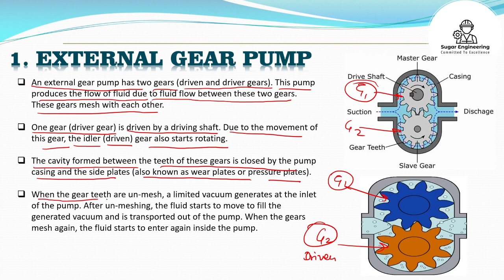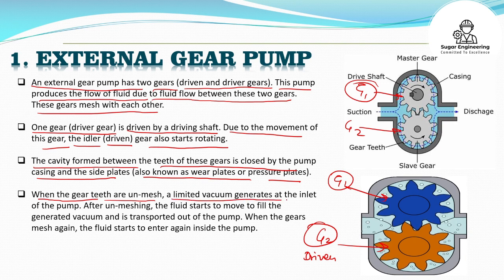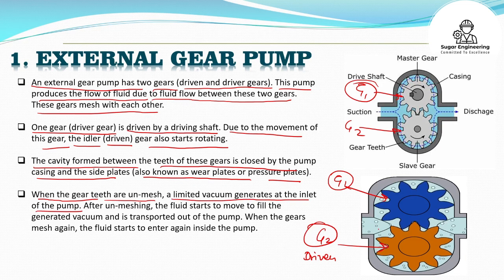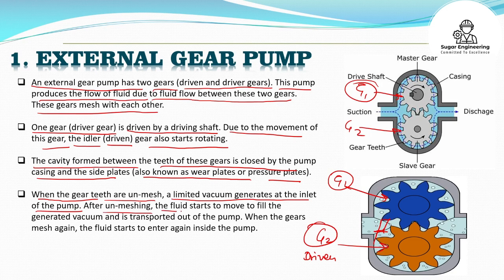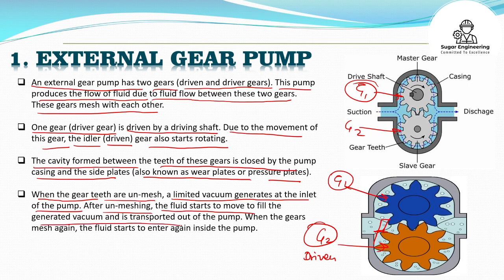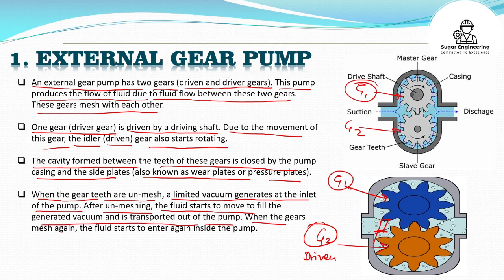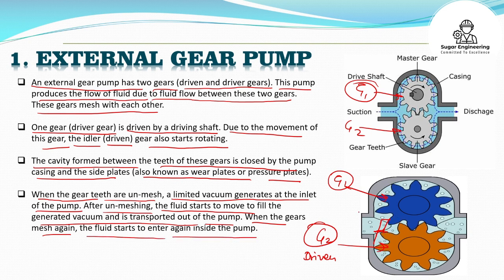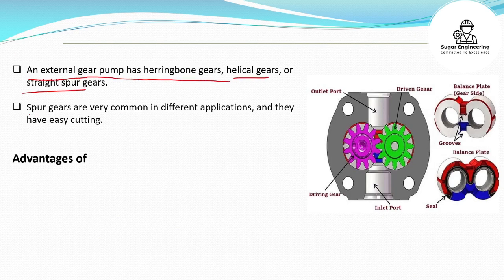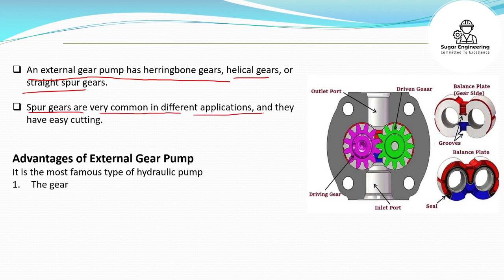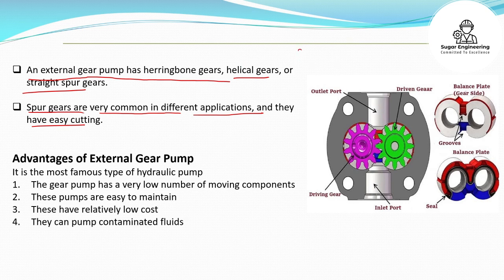When the gear teeth unmesh, a limited vacuum is generated at the inlet of the pump. After unmatching, the fluid starts to move to fill the generated vacuum and is transported out of the pump. When the gears mesh again, the fluid starts to enter the pump again. An external gear pump can have herringbone gears, helical gears, or straight spur gears. Spur gears are very common in different applications as they are very easy to cut.